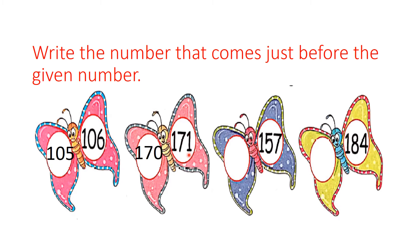Shall we move on to the next example? It is 157. I know you are all ready to say the answer. Which number comes before 157? It is 156. The next number is 184. Can you guess which number comes before 184? It is 183.